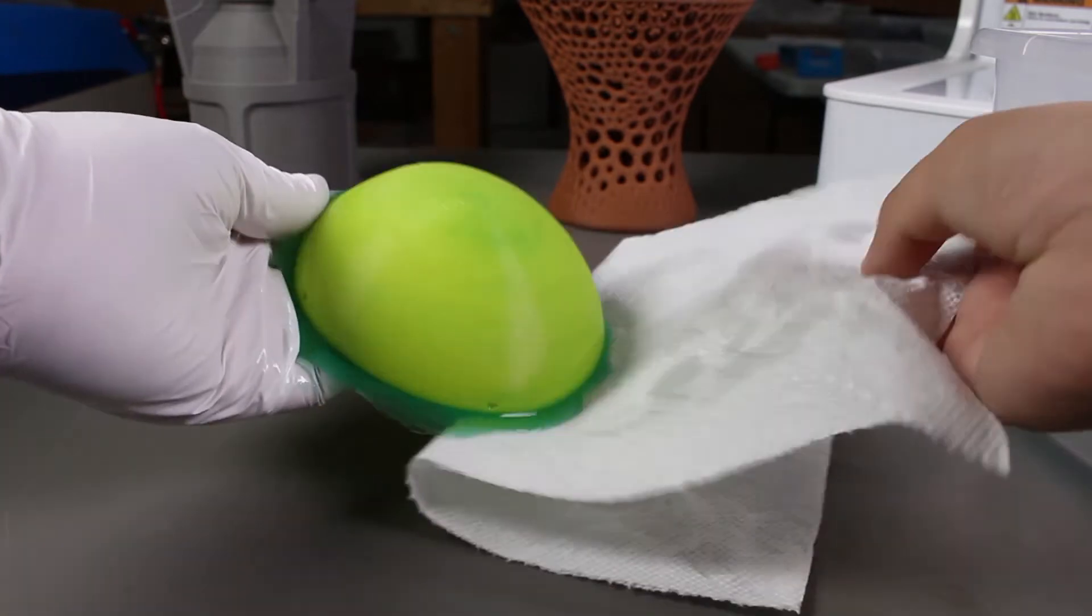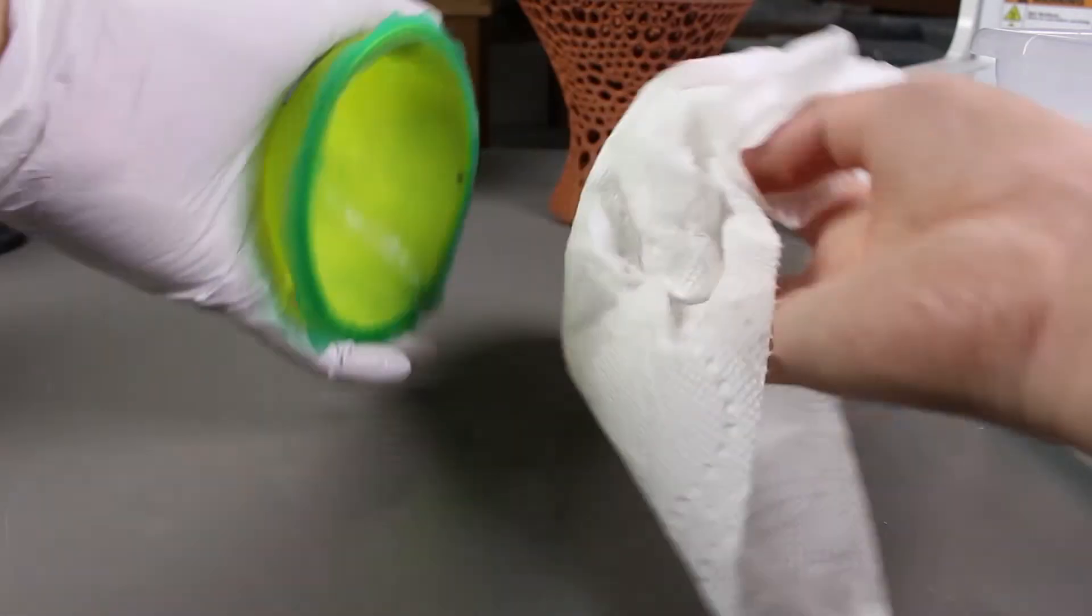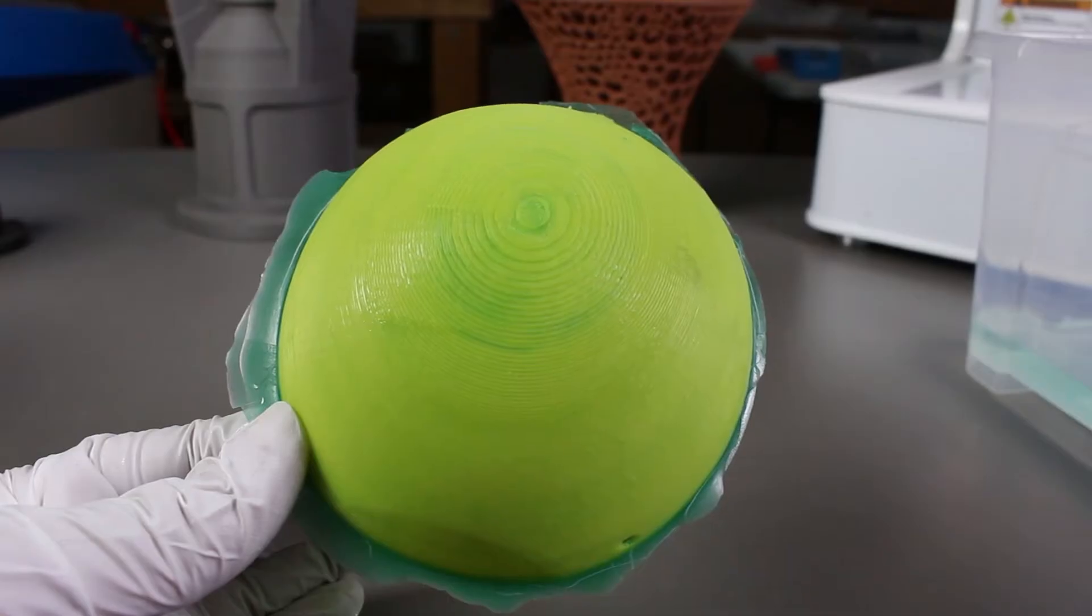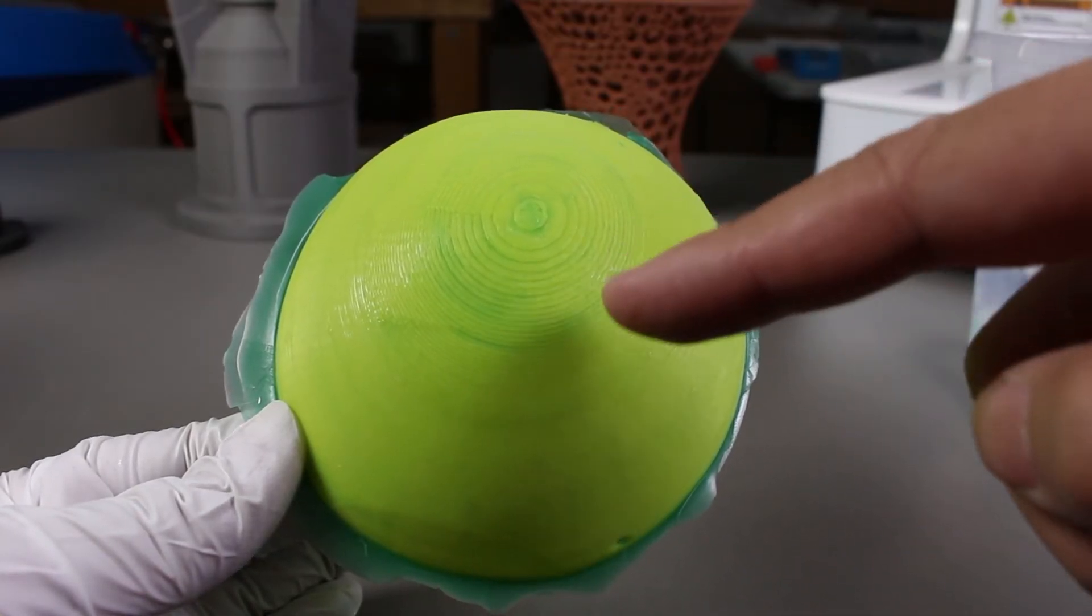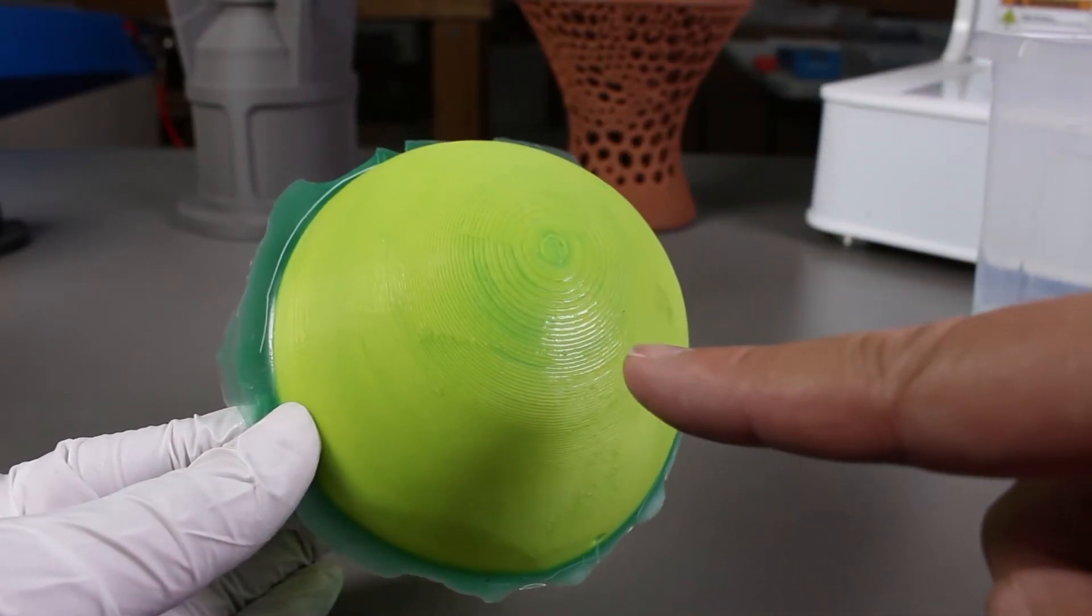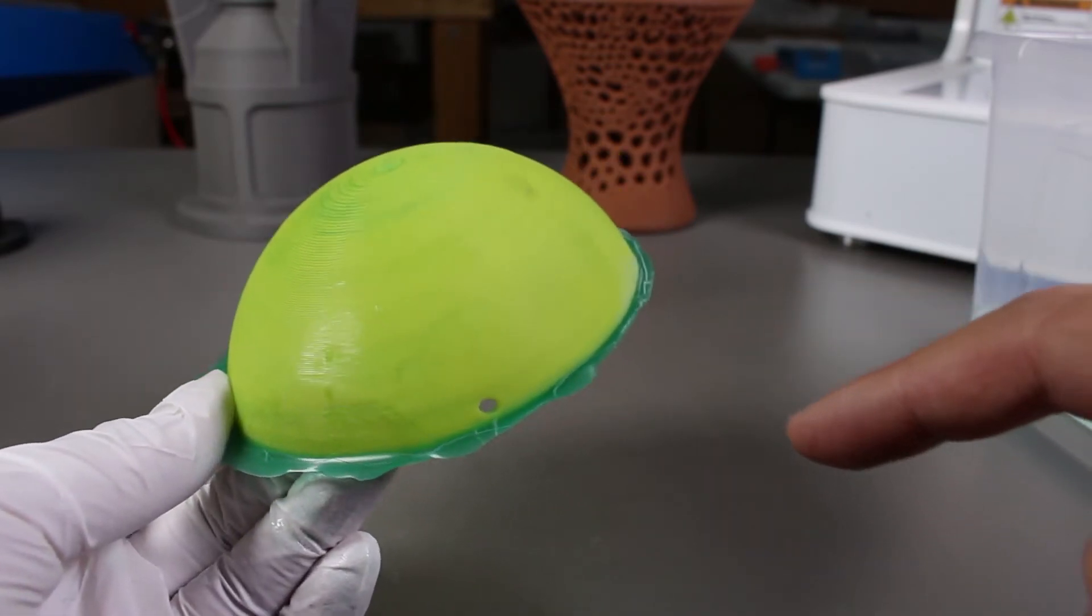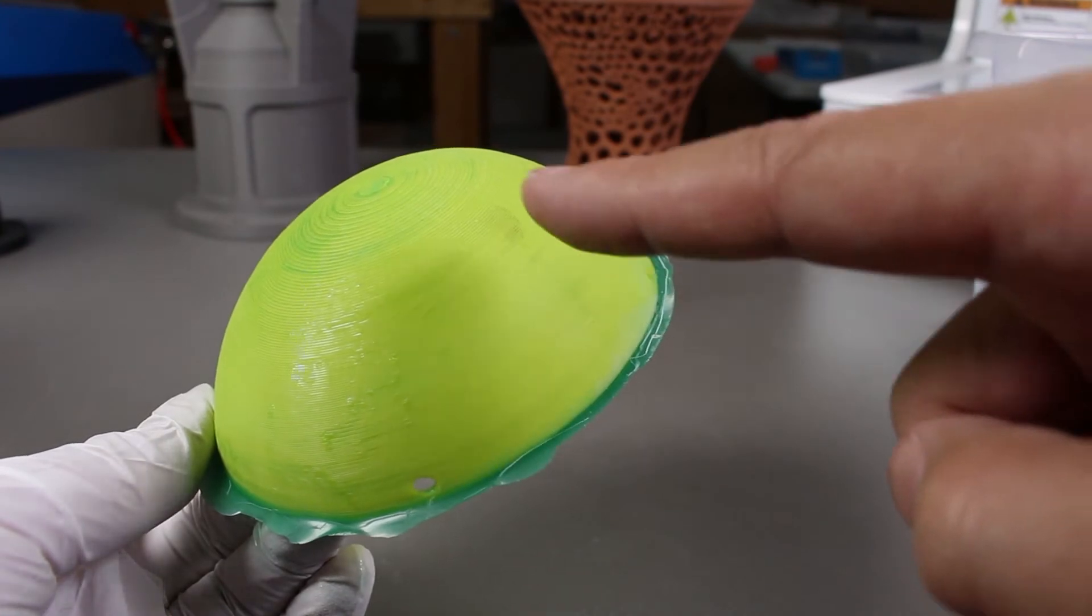So after washing it off with some alcohol, here's the part. Let's take a closer look at it. As we can see here, this part is shiny, it means that the transparent green resin actually cured here. Anywhere else on the print, if it looks matte then the resin didn't cure very properly.